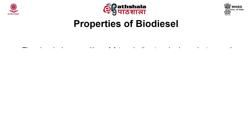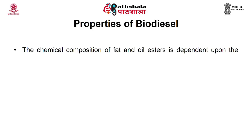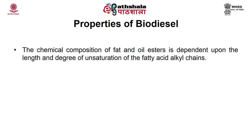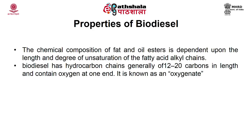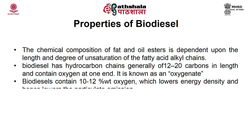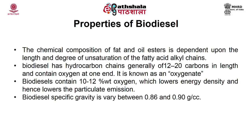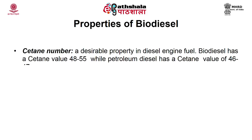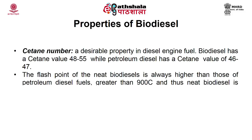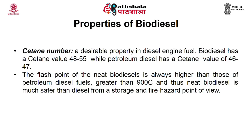The chemical composition of fat and oil esters depends on the length and degree of unsaturation of the fatty acid alkyl chains. Biodiesel has hydrocarbon chains generally 12 to 20 carbons in length and contains oxygen at one end — on average about 11% oxygen — which lowers the energy density and hence lowers particulate emission. It has a specific gravity of 0.86 to 0.9 g/cm³. The cetane number of biodiesel is 48 to 55, while petroleum diesel has a cetane value of 46 to 47. The flash point of neat biodiesel is always higher than petroleum diesel, making it a safer fuel.